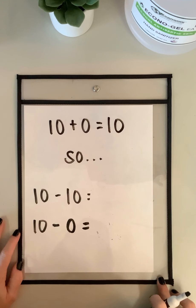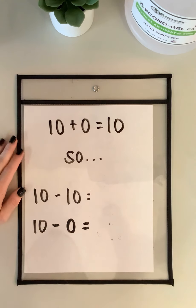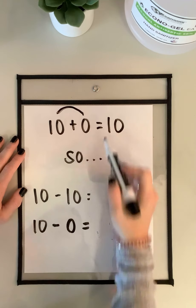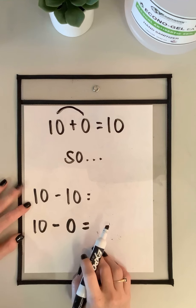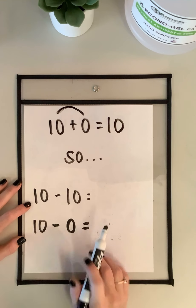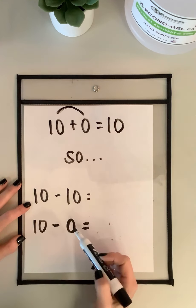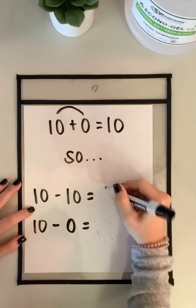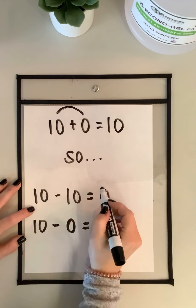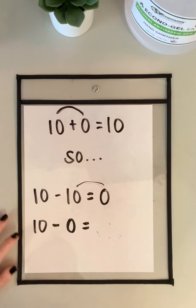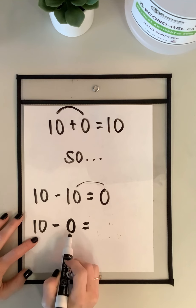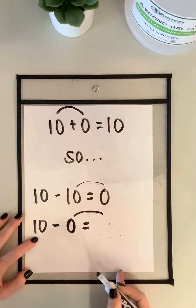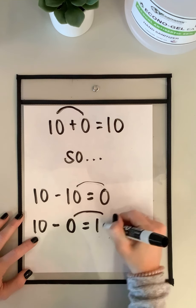10 plus 0 equals 10. I know that my two 10's partners are 10 and 0 — they equal 10 when you add them together. So using my subtraction 10 partners, 10 minus 10 is going to equal 0, because these are my partners. Now let's switch it: 10 minus 0 equals 10.